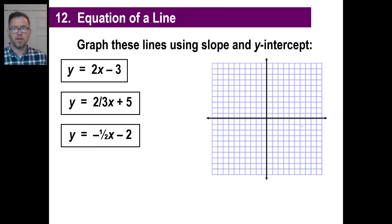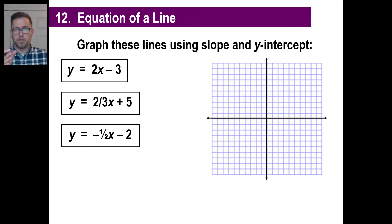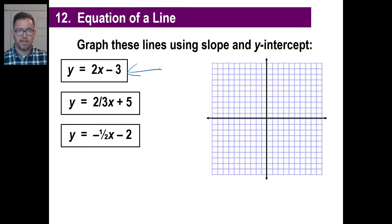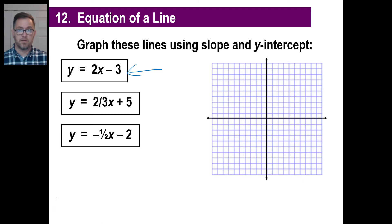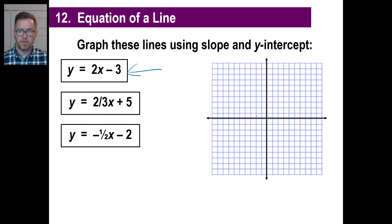Let's try a couple of these using slope and y-intercept. Go ahead and take a piece of graph paper, pause this, and let's work on this. y equals two x minus three. Can you visualize this line? Pause it and go ahead and graph it. The negative three tells us that's my y-intercept — one, two, three.